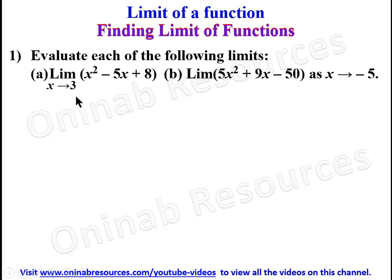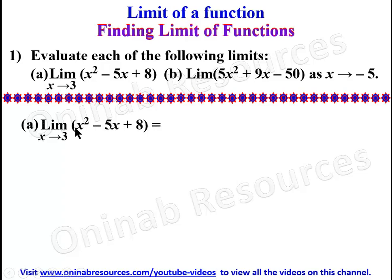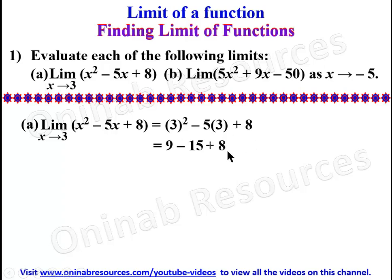Problem 1: evaluate each of the following limits. Starting with the first problem — the limit of x² minus 5x plus 8 as x tends to 3. We use direct substitution since this is a polynomial. We have 3² minus 5 times 3 plus 8, which is 9 minus 15 plus 8. 9 plus 8 gives 17, minus 15 gives 2.